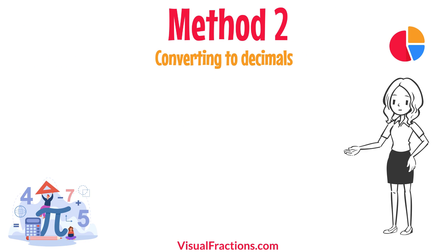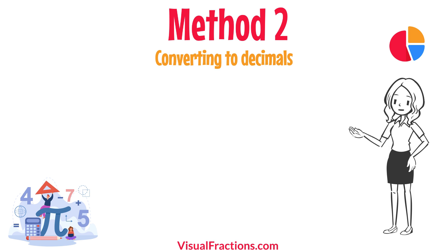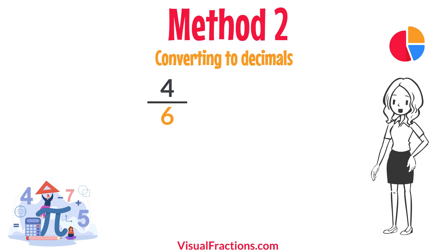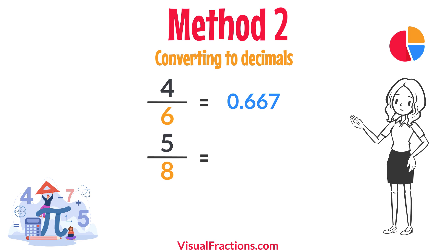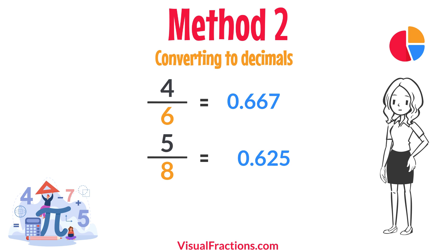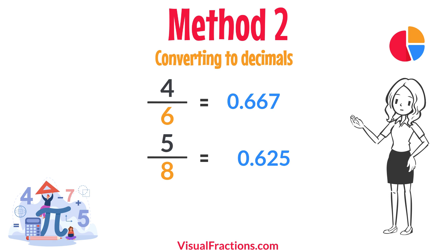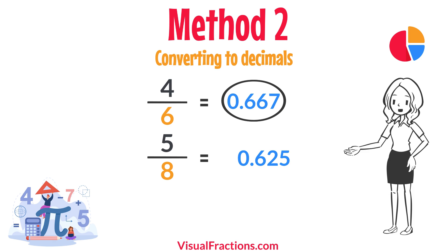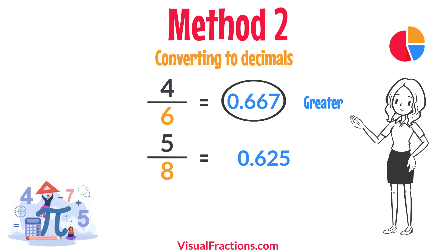For a second method, let's convert each fraction to a decimal. Using a calculator, divide 4 by 6 to get approximately 0.667, and divide 5 by 8 to get 0.625. This calculation shows that 0.667 is greater than 0.625, confirming that 4 sixths is indeed greater than 5 eighths.